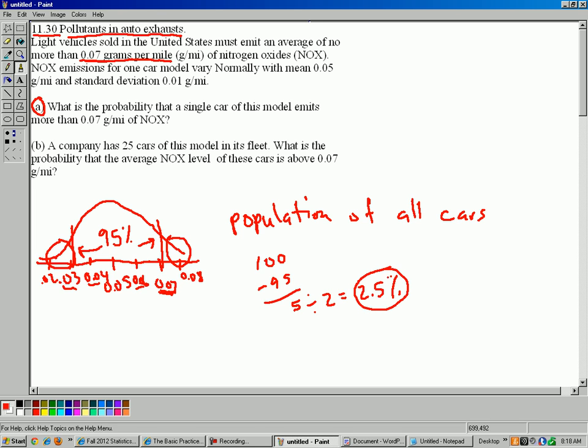So roughly 2.5% of all the cars fail the emissions test. They have more than 0.07 grams per mile. Now, if you want a more precise answer, you can take the 0.07, convert to z-scores, look up on the table, just like we did in chapter 3, and then you can get your answer that way. That's perfectly fine as well. And that's part A.